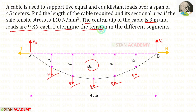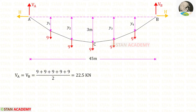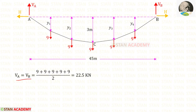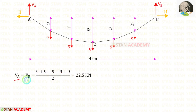Now let us find the vertical reactions VA and VB. We know that in this cable we have symmetrical loading, so we can easily find the vertical reactions. To find them, we have to add all of the loads and divide by 2. So for VA and VB, we will get 22.5 kilo Newton.